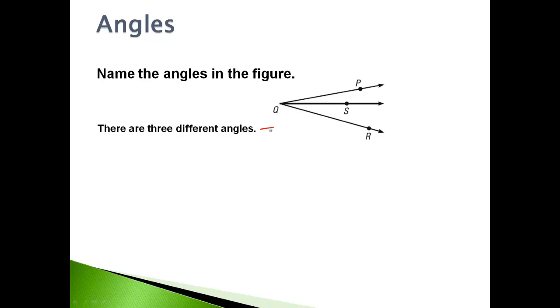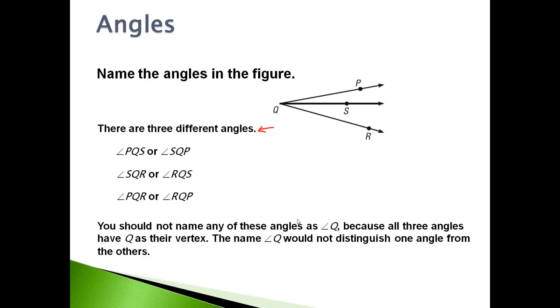First one, angle PQS right here, or SQP. Different way of naming the same angle. Angle SQR, or RQS. And then the outside one, PQR, or RQP. And again, I'm saying it here again because it's important. You should not name any of these angles as angle Q because all three angles have Q as a vertex. The name angle Q would not distinguish one angle from the others. So that's why you don't do that.